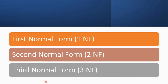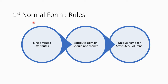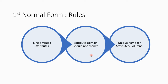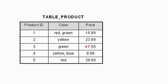The first normal form requires single valid attributes — your table should contain only atomic values in every cell, and there should not be any repeating groups. To avoid repeating groups, we fix a primary key. While converting multi-valued attributes to single-valued, we should not change any domain or attribute data.